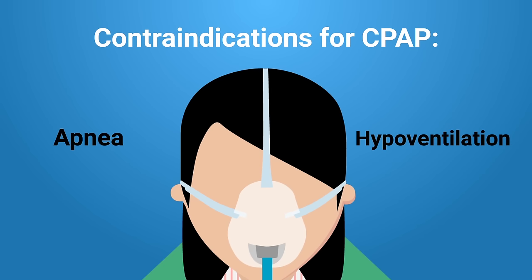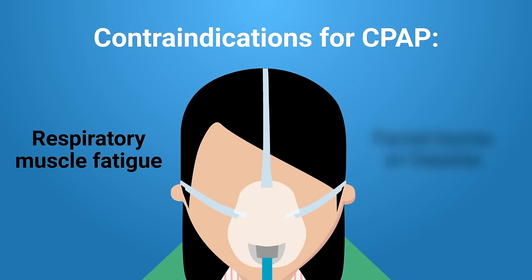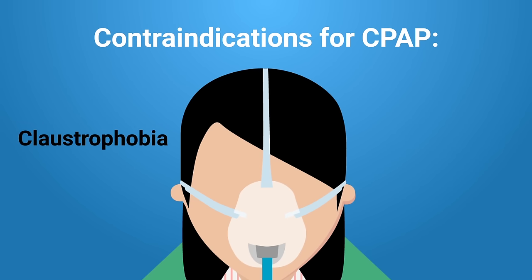Additional contraindications for CPAP include respiratory muscle fatigue, facial burns or trauma — because if there are burns or trauma to the face, the mask will likely be too uncomfortable for the patient to tolerate — and claustrophobia, because even though the mask is helping, a claustrophobic patient may feel like it is suffocating them and will probably not tolerate it.